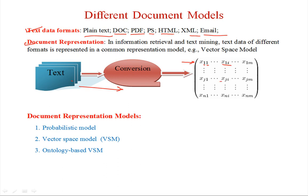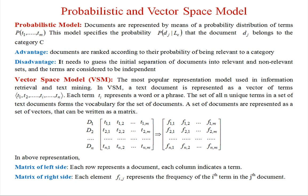There are several document representation models, of which three are most important: first, the probabilistic model; second, the vector space model; and third, the ontology-based vector space model. We will first examine the probabilistic and vector space models.